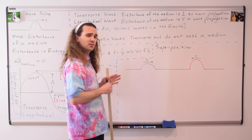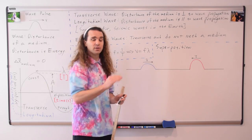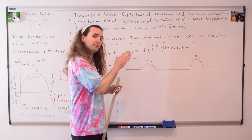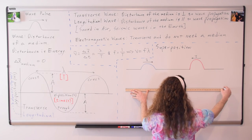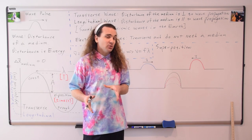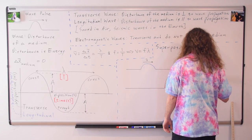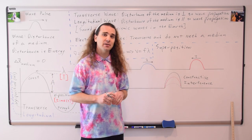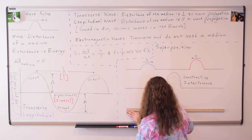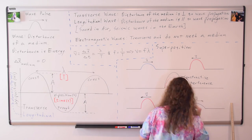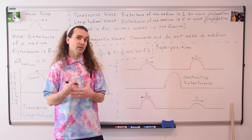Let's say we have two wave pulses in a rope moving toward one another. I've identified them as blue and red to better visualize what's happening, but realize it's all one rope. When both wave pulses occupy the same space, the amplitudes add together to create one larger wave pulse. This is called constructive interference. The two waves then continue on their way, unaffected by the constructive interference that occurred.